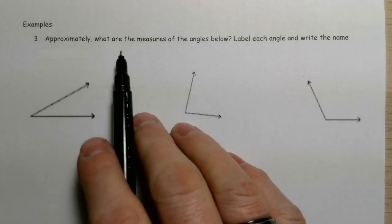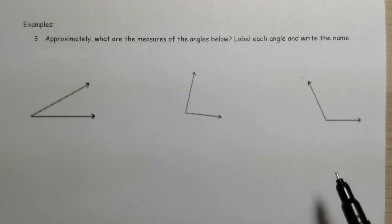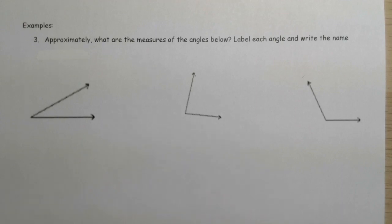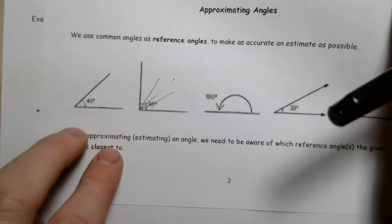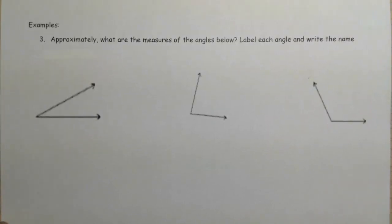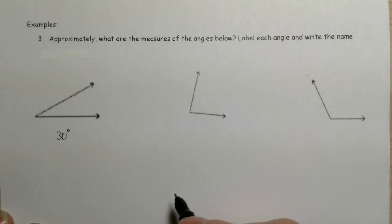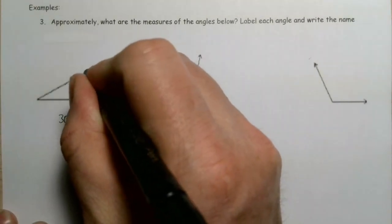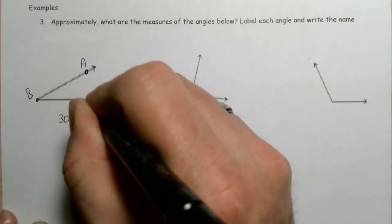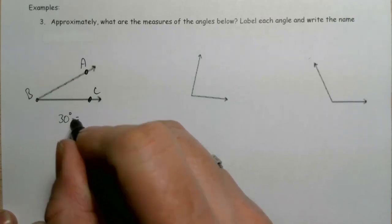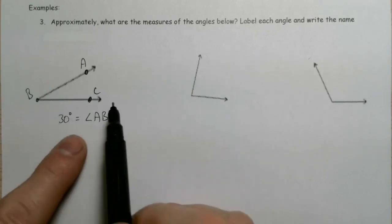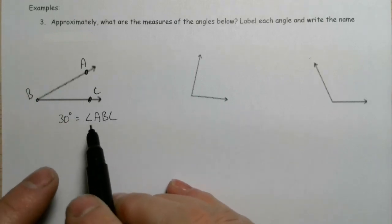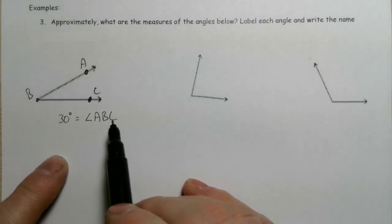Approximately what are the measures of the angles below? Take a quick look at this first one. If I pull out the 45-degree reference, I can see that this angle is a little bit less than 45 degrees — that could be roughly 30 degrees. Now let's label it: I'll put a point here and here, and call them A, B, C. So I label it as angle ABC, where the vertex of the angle is in the middle. This does not mean angles A, B, and C — this is angle ABC. You could also write it as angle CBA.